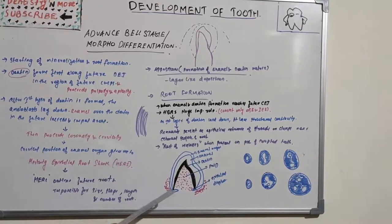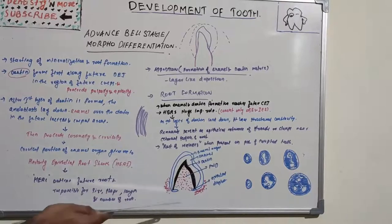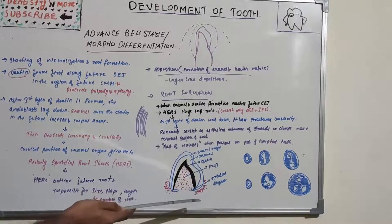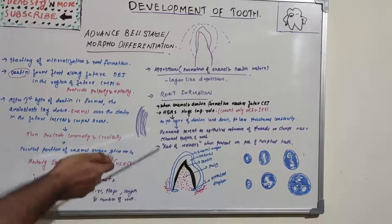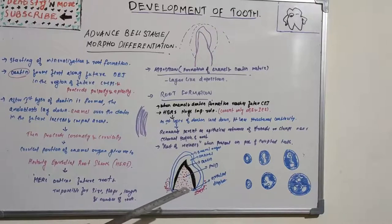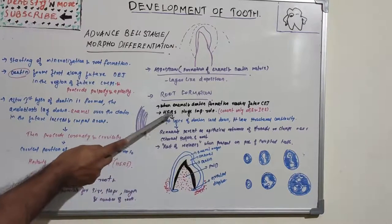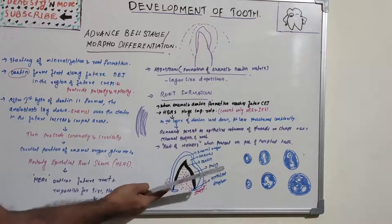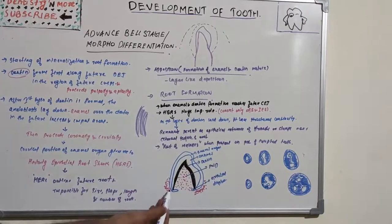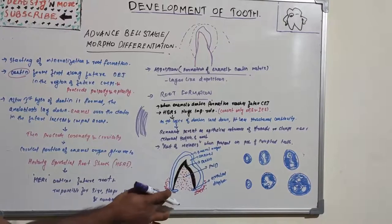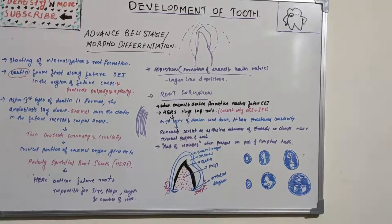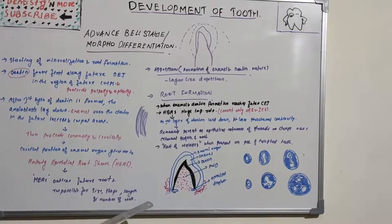Prior to root formation, HERS forms an epithelial diaphragm. The outer and inner enamel epithelium bend horizontally at the future cemento-enamel junction to form this diaphragm, which narrows the wide cervical opening. The proliferation of cells of the epithelial diaphragm is accompanied by proliferation of pulpal connective tissue adjacent to the diaphragm.